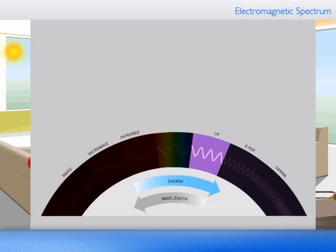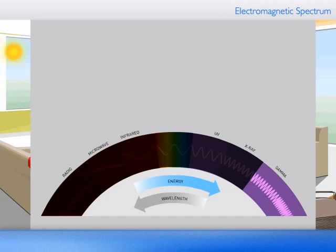Still shorter wavelengths bring us first to X-rays, which penetrate the body, and then to the highly dangerous gamma rays, emitted as a result of nuclear decomposition.